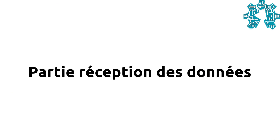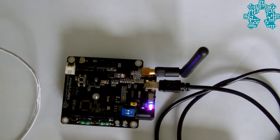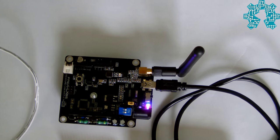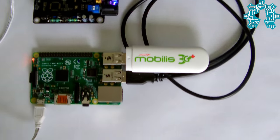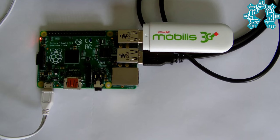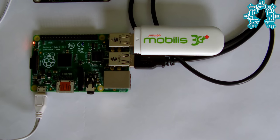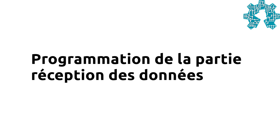For the reception of data, a Freakduino is used to transmit the data received from the other nodes of the network to the Raspberry Pi B+ via a serial connection. The Raspberry Pi then uses a 3G connection to send the data to the Plotly service.